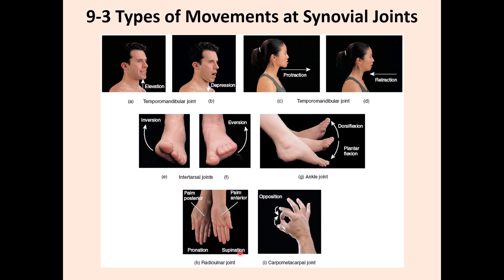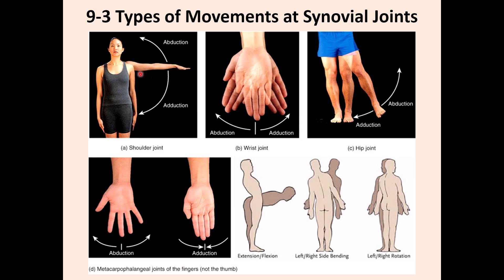Supination is the anatomical position where the palm faces anteriorly. Pronation rotates the forearm so the back of the hand faces anteriorly and the palm faces posteriorly. Opposition is touching the four fingers to the thumb — like making an okay sign — and is seen mainly in humans. For abduction and adduction, think of the midline: moving toward the midline is adduction; moving away is abduction.